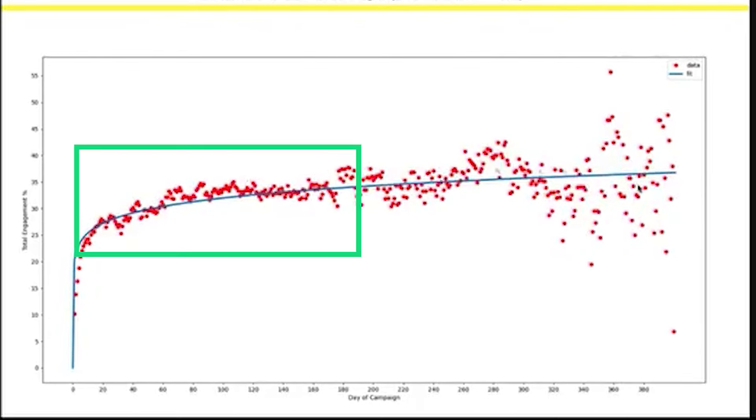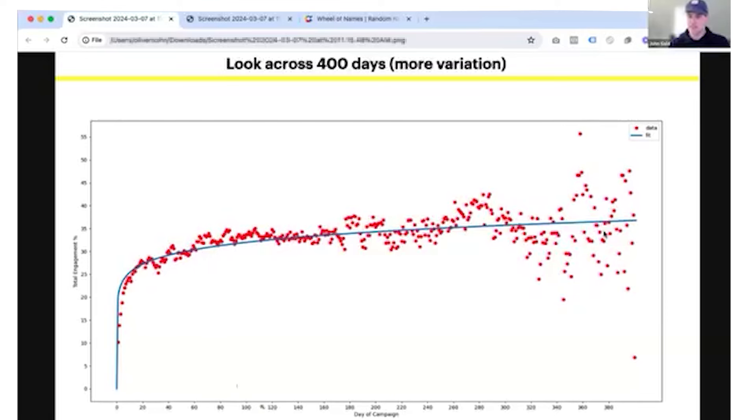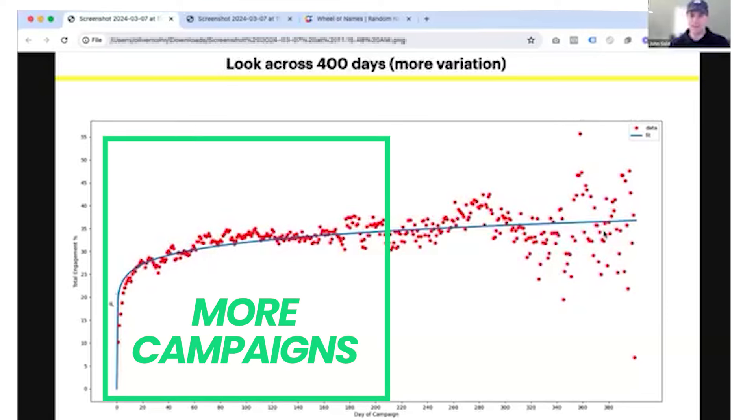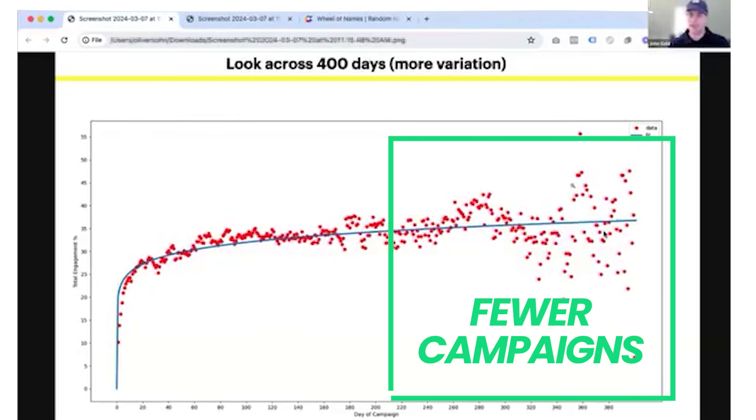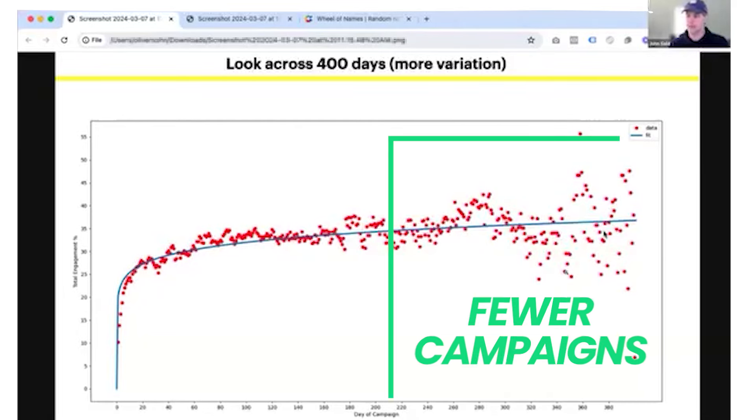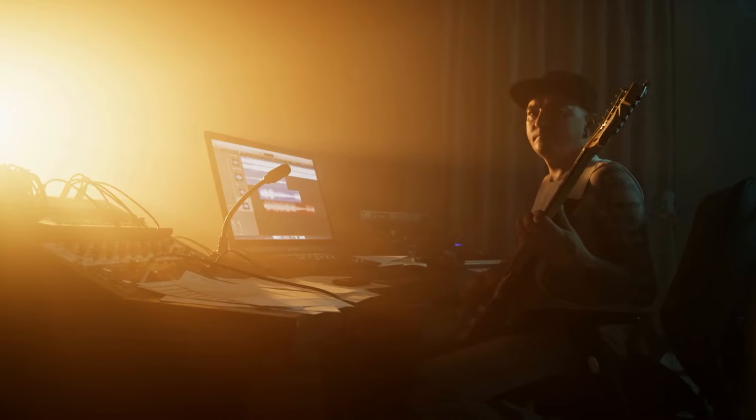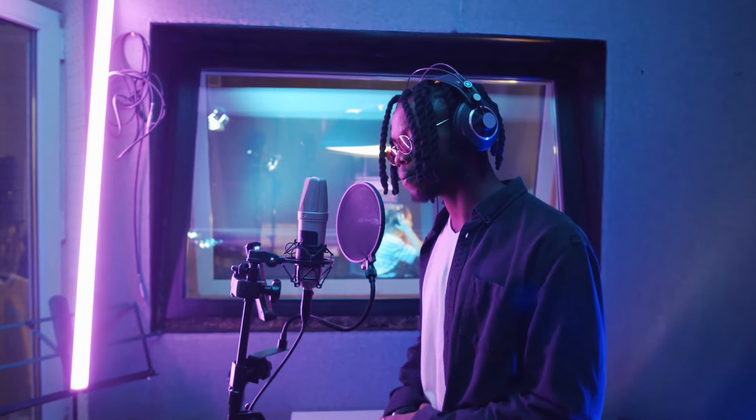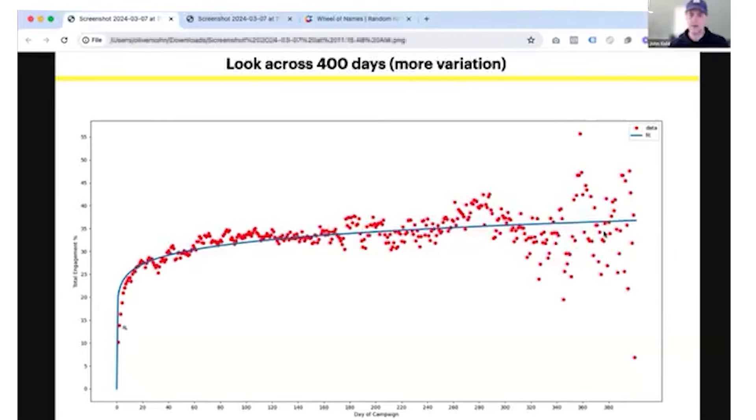There are a couple interesting things I want to point out. First, you see that at the beginning of this graph all the red dots are very close together, and then as time goes on there's a lot more diffusion. The reason is that there are more campaigns in the early days and fewer campaigns represented in the data points further to the right. Not every artist on Hypedit lets every one of their campaigns run for over a year, but a lot of campaigns run for 10 or 20 days. This is why we get more diffused results over here.